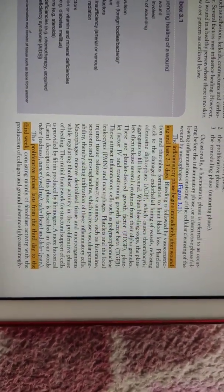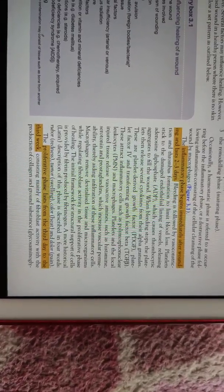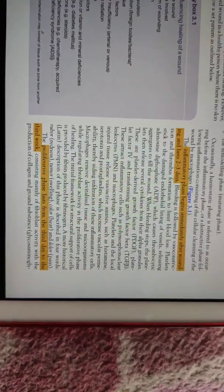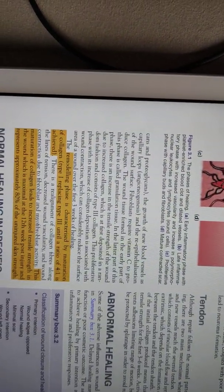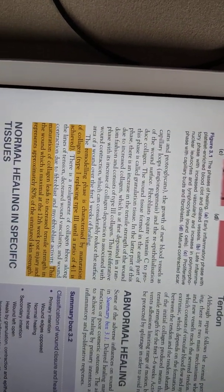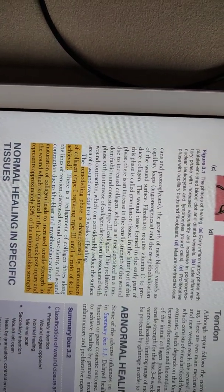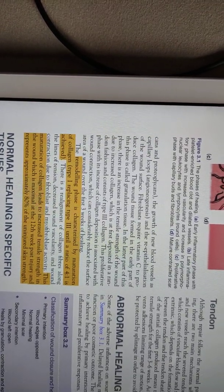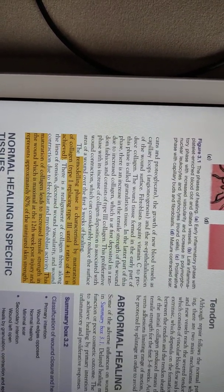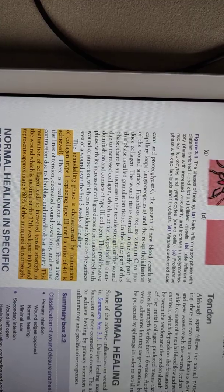The initial framework for support is provided by fibrin, which is produced from fibrinogen. On top of that, proliferation occurs mainly through fibroblasts, which secrete collagen and ground substance. This process requires vitamin C.